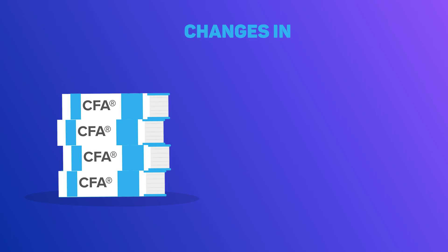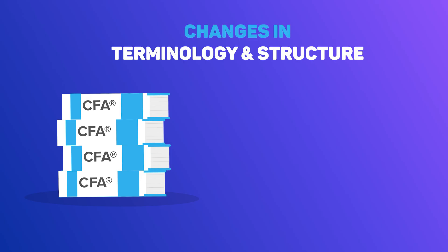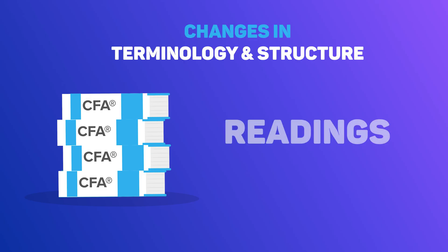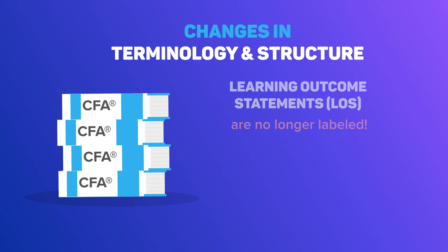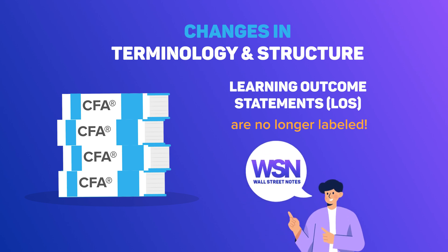Let's start with the general changes in terminology and structure. What we used to know as readings will now be referred to as learning modules or LMs, and the learning outcomes or LOSs are no longer labeled. But no worries, because Wall Street Notes will still be covering all the outcomes in order so that you can be sure you cover every single one from start to finish.